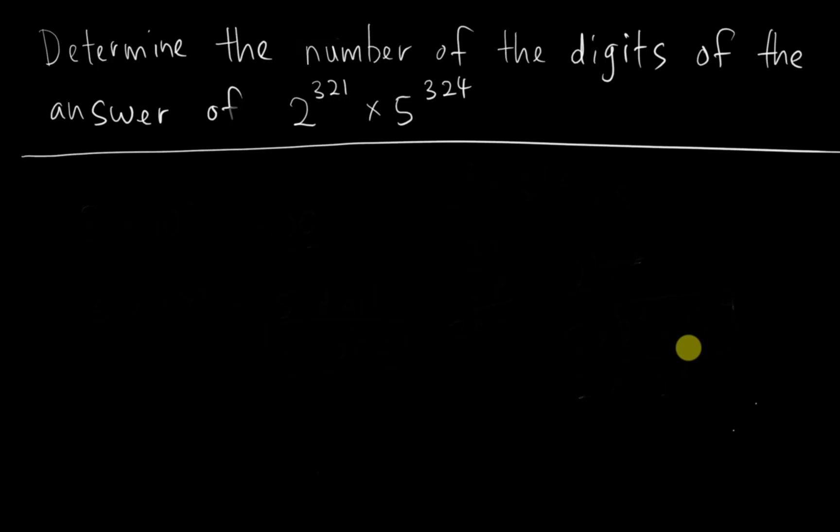I find this question a little bit unusual, so I decided to make a video to explain it. The question asks you to determine the number of digits of the answer of 2 to the power of 321 multiplied by 5 to the power of 324. The question doesn't want you to find the answer itself — it wants to know how many digits your final answer has.